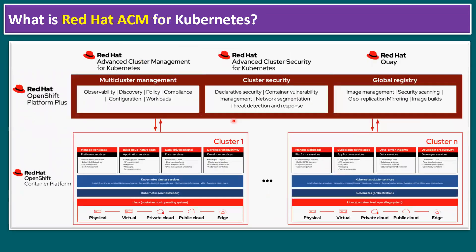Here is a quick diagram to illustrate Advanced Cluster Management. As we know, OpenShift Advanced Cluster Management comes with the OpenShift Platform Plus license. With this license it allows you to manage not just one cluster but multiple clusters — Cluster 1, Cluster 2, through Cluster N. These OpenShift clusters can run on bare metal, VMware vSphere, any private cloud, public cloud, or even a hybrid cloud environment. Wherever the OpenShift clusters are running, all of them can be centrally managed using ACM.